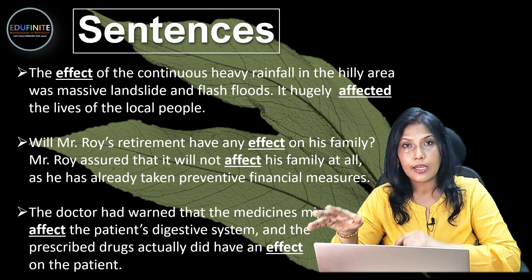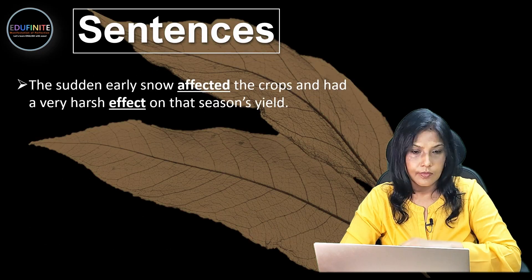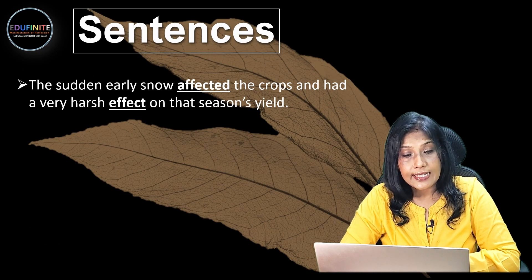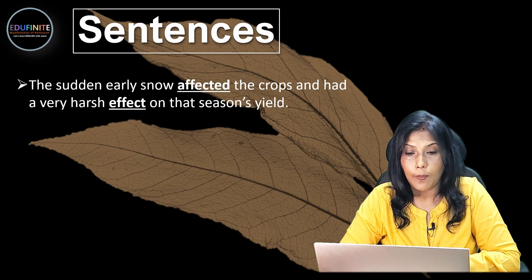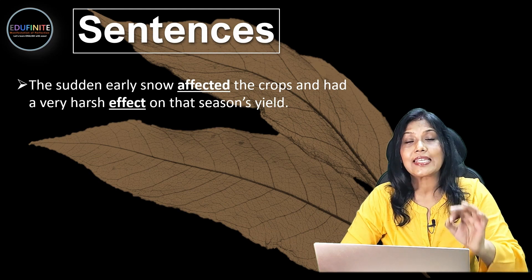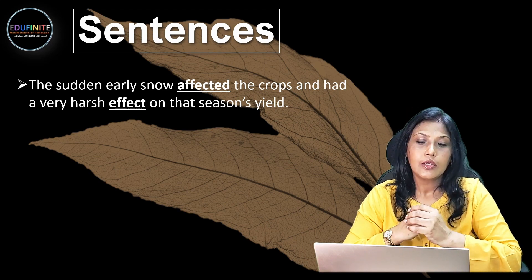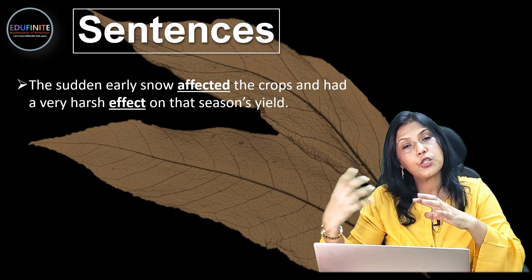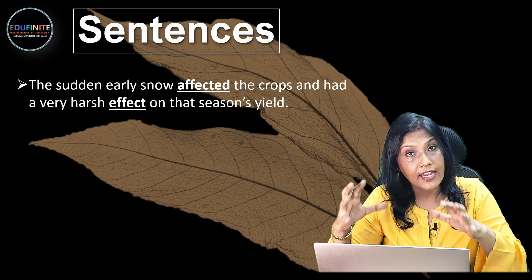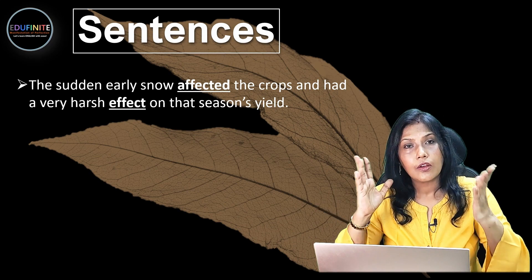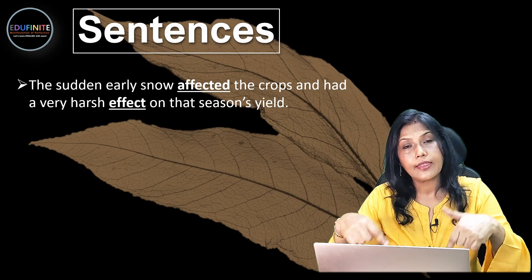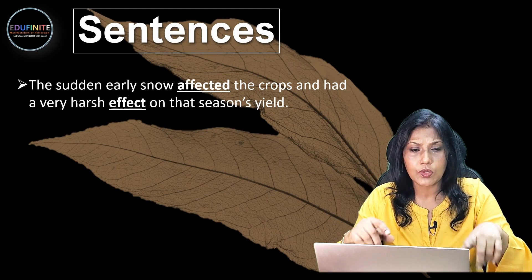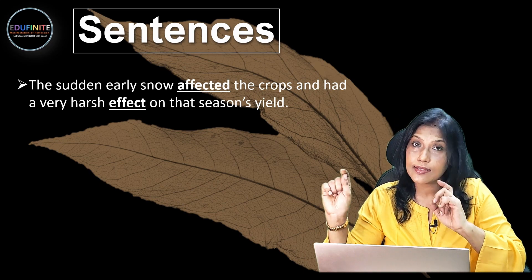'The sudden early snow AFFECTED the crops and had a very harsh EFFECT on that season's yield.' What happened? Early snow caused damage to the crops — that's how it affected the crops. And the result was that season's yield was very low, so it had a very harsh effect on that season's yield.